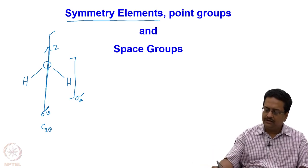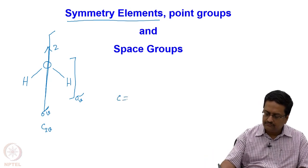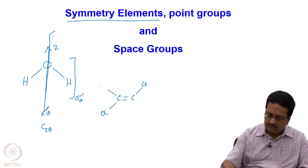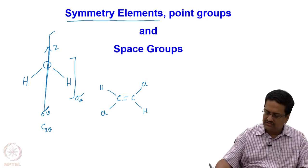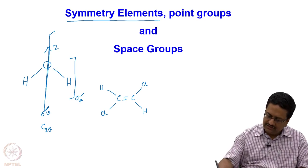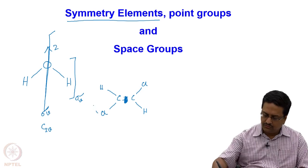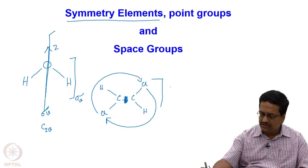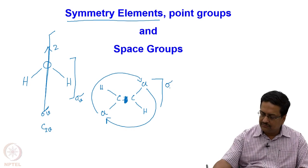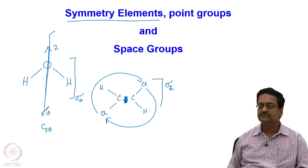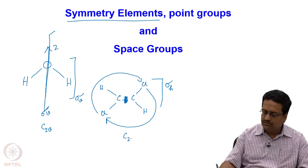Both mirror planes contain the two-fold axis, and that is why we call them sigma v's, and the corresponding point group notation we write as C₂v. Similarly, if we have a molecule like 1,2-dichloroethene, in this particular case the two-fold axis is perpendicular to the plane of projection, so that this chloro goes to that chloro and that chloro comes to this chloro — which is a two-fold axis. The plane of the molecule is the sigma plane and we write it as sigma h. So this molecule has point group C₂h.